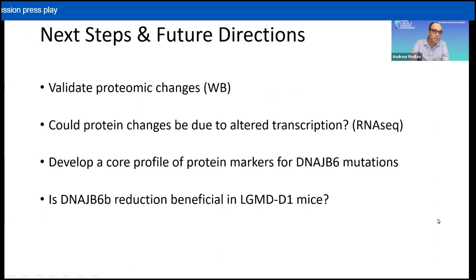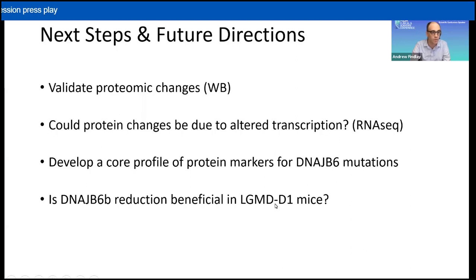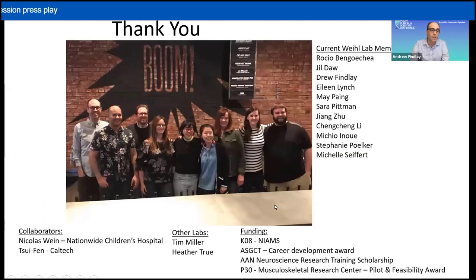For immediate next steps, we need to validate our proteomic changes by Western blots and determine if changes are due to altered transcription. Using this approach, we want to develop a core profile of proteins that could serve as biomarkers of disease activity for LGMD-D1. Finally, we want to test if reducing the B isoform could be beneficial in our knock-in mouse model. I'd like to thank May Pang, Jill Daw, Sarah Pittman, and Rocio Bangochea who did all this work, Sui Fan's group at Caltech for the proteomics, Tim Miller's group for laying the groundwork using ASOs for isoform switching, and my funding sources.